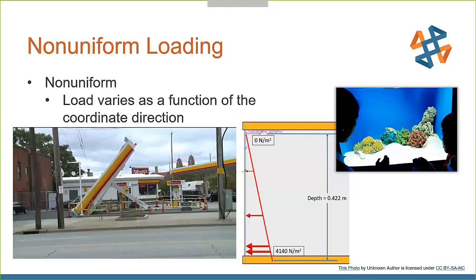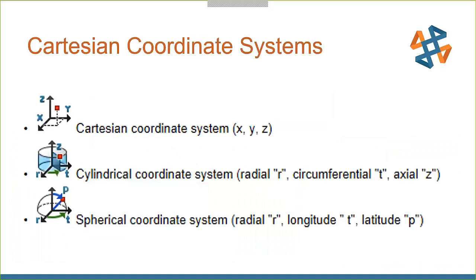Let's take a look at the different ways we can set that up. We have a Cartesian coordinate system, cylindrical, and a spherical coordinate system. We all know the Cartesian XYZ. In the cylindrical coordinate system, we're dealing with a radial direction, a circumferential direction, and an axial direction. And then for spherical, we have radial, longitudinal, and latitude directions — so it changes over those two angles. T and P are basically angles; circumferential T is also an angle the loading will change over.